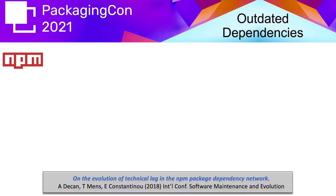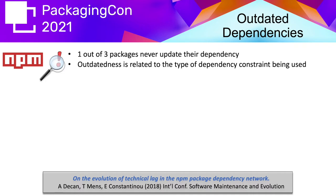In some early analysis specifically for the NPM dependency network, we investigated to what extent dependency constraints reflect and impact the outdatedness of packages. What we found was that in NPM, one out of every three packages never actually updates their dependency constraints, and as a result the packages become outdated because they do not rely on the latest version of their dependencies.